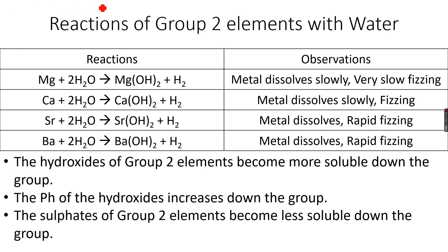When group 2 elements react with water, they form the hydroxide and hydrogen gas. In the case of magnesium, the metal dissolves slowly and there is slow fizzing as hydrogen gas is evolved. However, this reaction is so slow that you will feel like no reaction is happening — bubbles appear so rarely that it looks like nothing is occurring, even though it actually is.